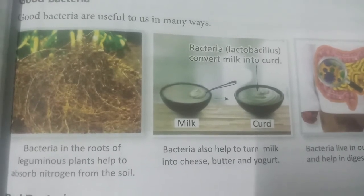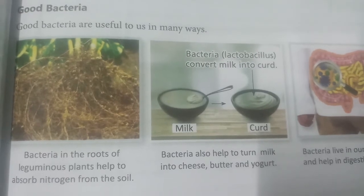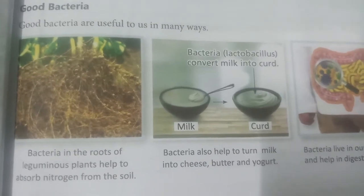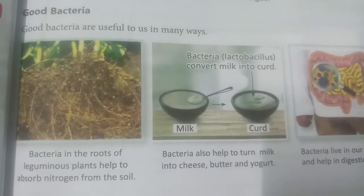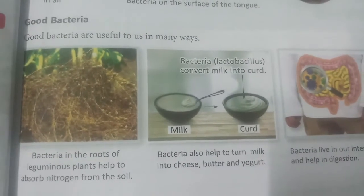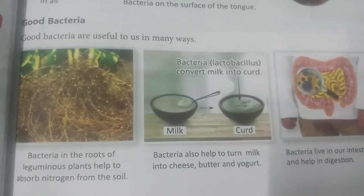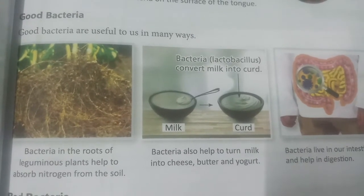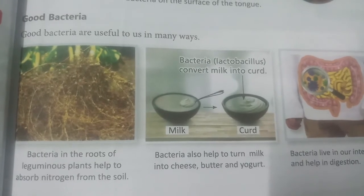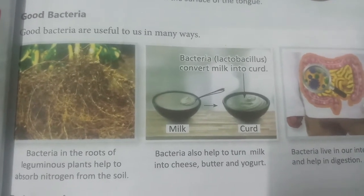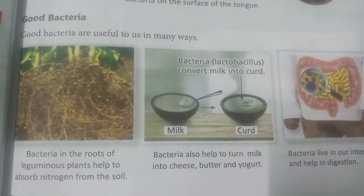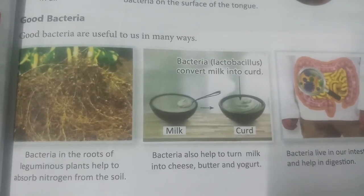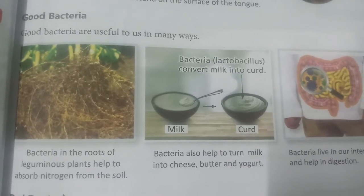Nitrogen is about 78 percent of the air, but we cannot breathe nitrogen directly. Some bacteria take nitrogen from the air and soil and convert it into amino acids and nitric acids. Nitrogen is important because protein in our body is made from nitrogen, and bacteria in leguminous plants help make this nitrogen available.